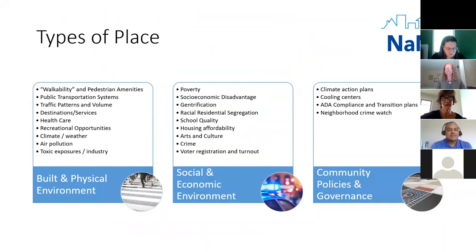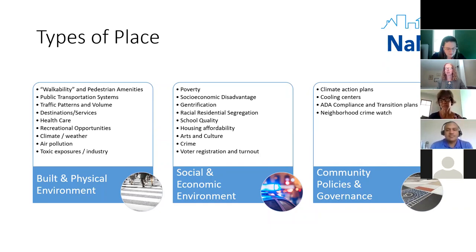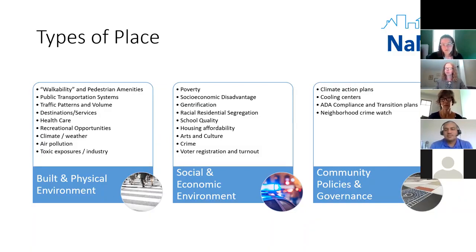When we think about place, a lot of the measures in NANDA are thought about in terms of different features of the environment: the built and physical environment — things that are human-made — the social and economic environment, which plays a big role in shaping behavior through things like crime and poverty. We also think about larger things like policies and community governance, such as compliance with the Americans with Disability Act transition plans.